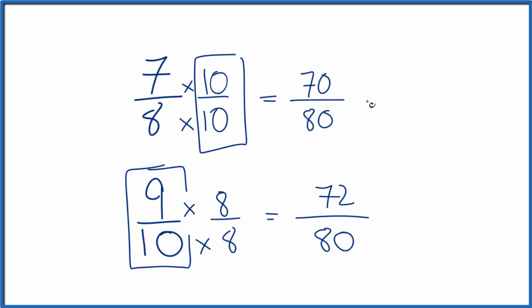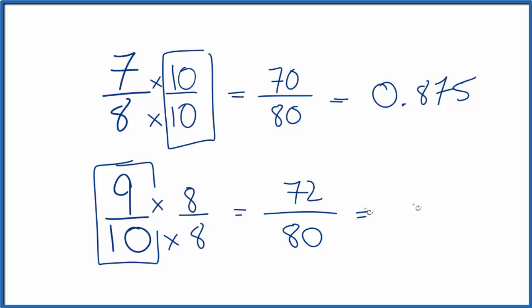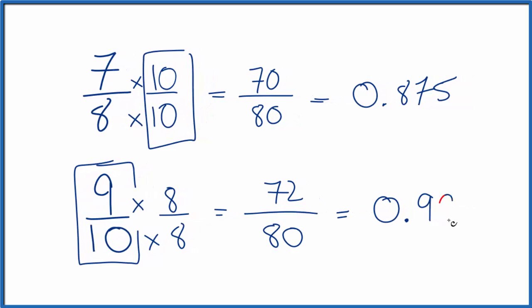We could also convert these to decimals. 70 divided by 80 gives us 0.875. 72 divided by 80, that's 0.9. And if it helps, you could write 0.900 to compare these two.